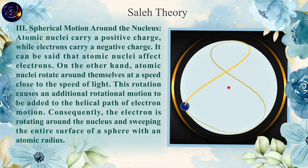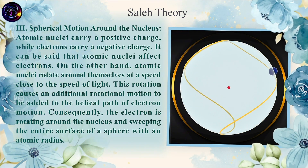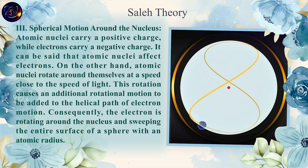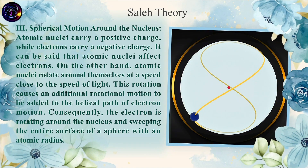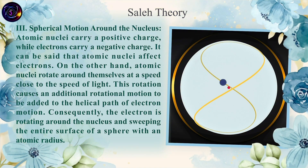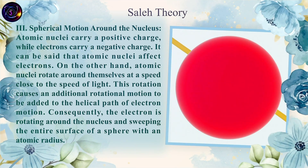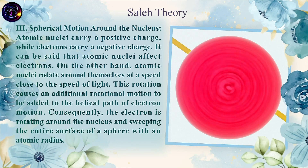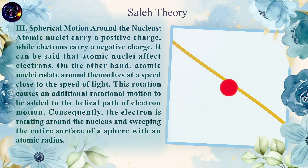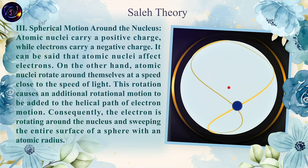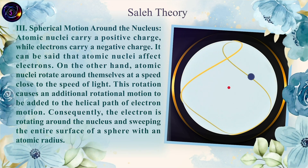3. Spherical Motion Around the Nucleus: Atomic nuclei carry a positive charge while electrons carry a negative charge, meaning atomic nuclei affect electrons. On the other hand, atomic nuclei rotate around themselves at a speed close to the speed of light. This rotation causes an additional rotational motion to be added to the helical path of electron motion. Consequently, the electron rotates around the nucleus, sweeping the entire surface of a sphere with an atomic radius.